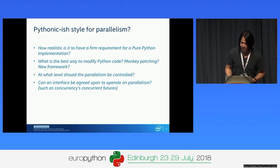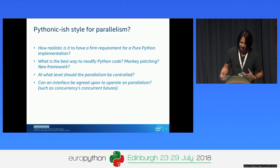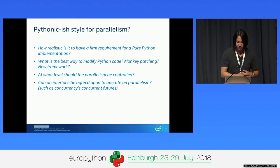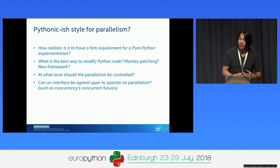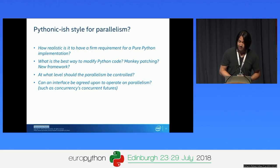This then poses four questions: How realistic is it to have a firm requirement for a pure Python implementation? What is the best way to modify your Python code—is it monkey patching or a new framework? At what level should the parallelism be controlled—at the module call level, or when calling from our own source code? And can an interface be agreed upon to operate on that parallelism? Concurrent futures did that relatively well—can we do the same?